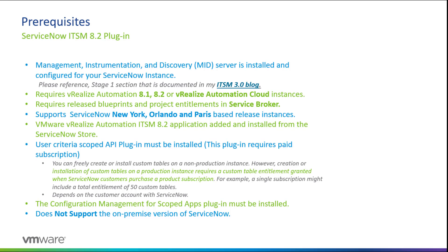The ITSM 8.2 plugin also supports New York, Orlando, and Paris ServiceNow-based release instances. You need to add and install the application from the ServiceNow store, and you need both plugins — the user criteria scoped API and the configuration management for scoped apps — installed on your instance.